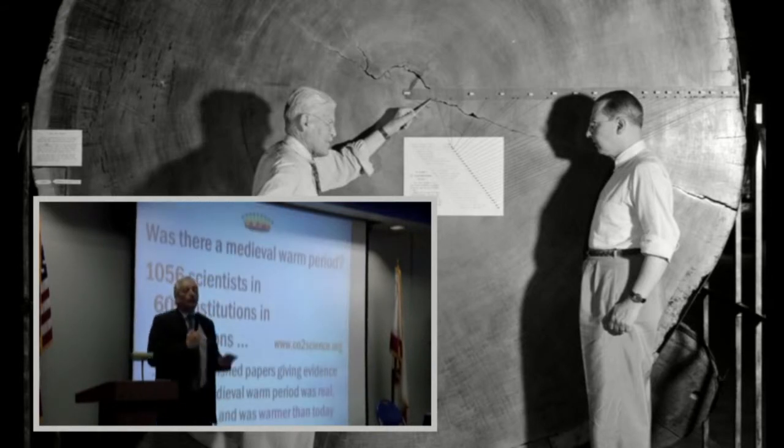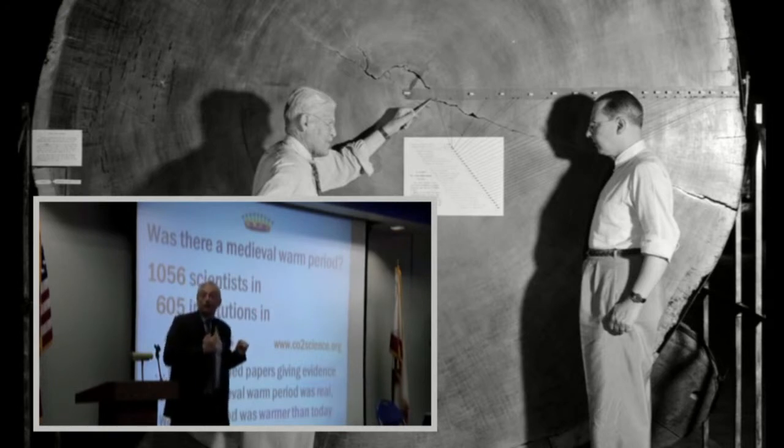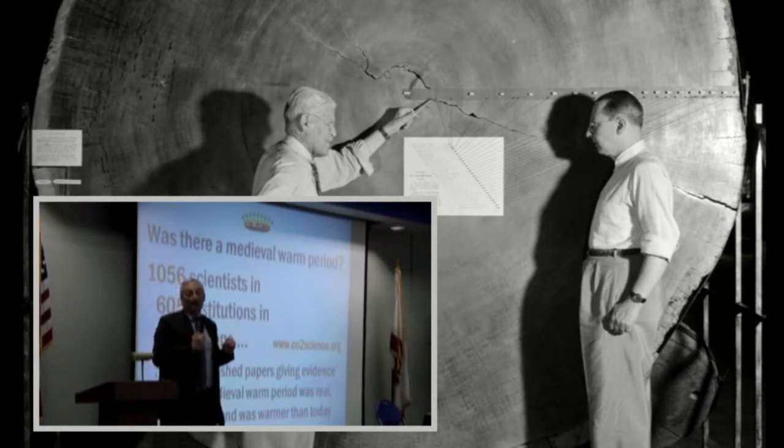Because all of this doesn't establish that there was a medieval warm period. The fact that their graphs showing there wasn't are bogus and based on a technique that can't tell us whether there was a medieval warm period or not because the tree rings are not reliable.